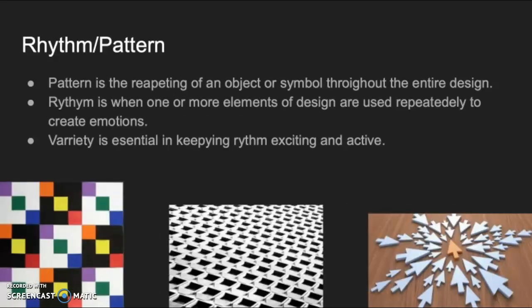Next, we have rhythm and pattern. Pattern is the repeating of an object or symbol throughout the entire design. Rhythm is when one or more elements of design are used repeatedly to create emotions. Variety is essential in keeping rhythm exciting and active. With the three images we have here, you can see on the very left that nine squares are used as the main point of view in the art.